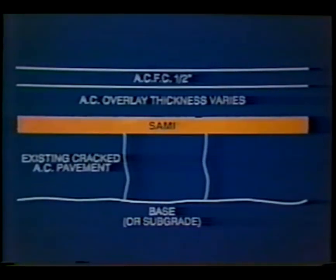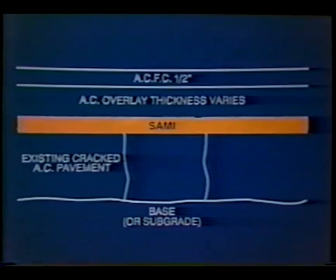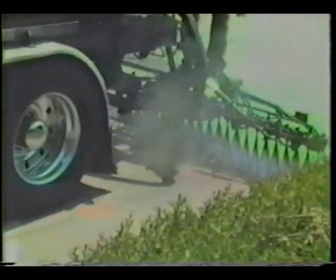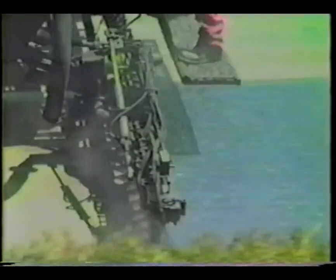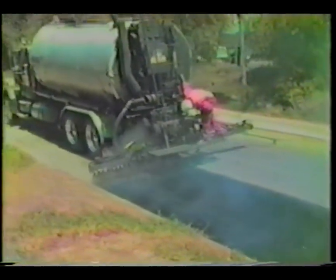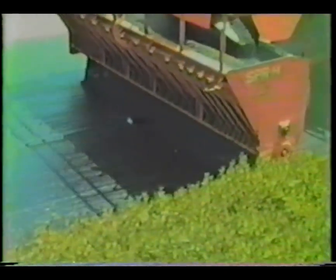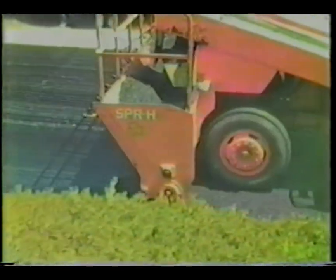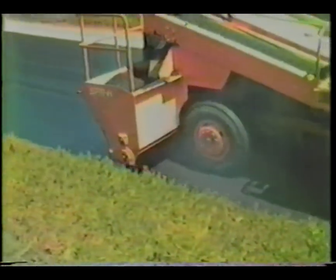A stress-absorbing membrane interlayer, or SAMI, is similar to a SAM, but is followed by placement of a one to three inch asphalt concrete surface layer. Stage construction may be used with the overlay placed later. SAMIs are used on both asphalt and concrete pavements to retard reflective cracking of thin overlays by reducing crack tip stresses. The encapsulating characteristics of a SAMI also reduce age hardening of asphalt concrete, extending the serviceable life of overlays.